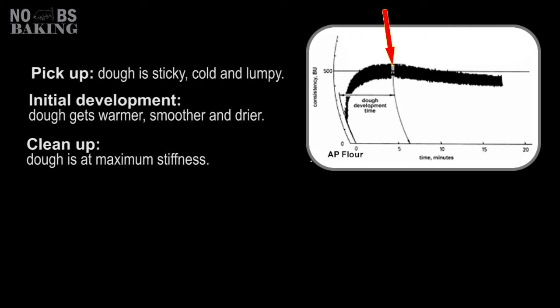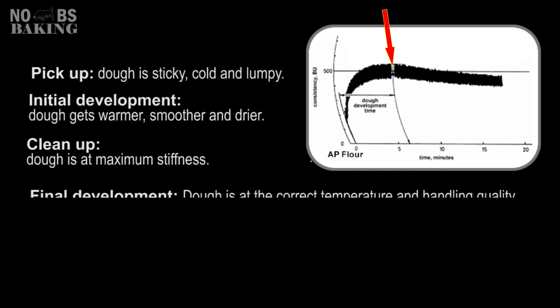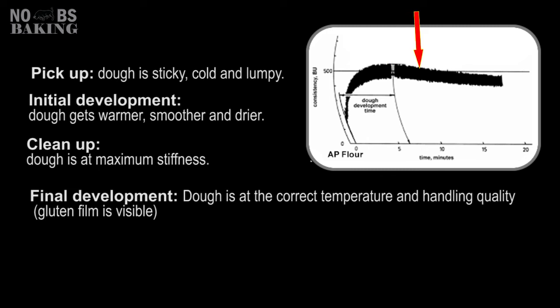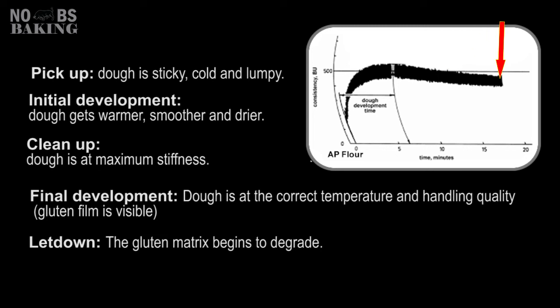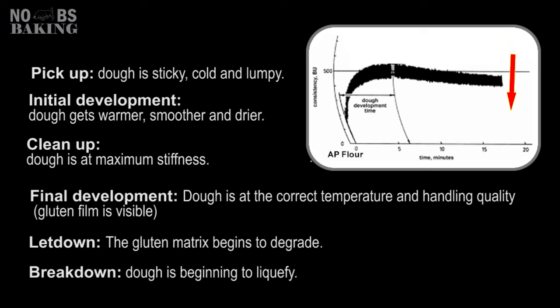Cleanup is the term used to describe a well-formed mass that has basically picked up all of the ingredients, and as it's at its maximum stiffness it's referred to as peak time. Final development is the point between where the dough is the stiffest and the point where it softens enough to drop below the 500 line. This is where the dough gets soft, smooth, and extensible, and where a windowpane check can be done. Let down is where the dough begins to degrade, dropping below the 500 line. Really strong white flour can have a very gradual degradation over a long period, whereas weaker flours or blends can drop quickly, entering into the breakdown phase rapidly.